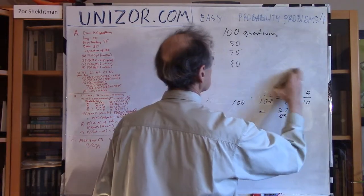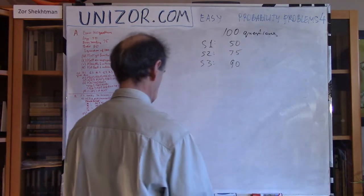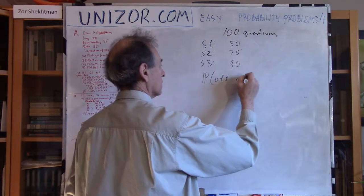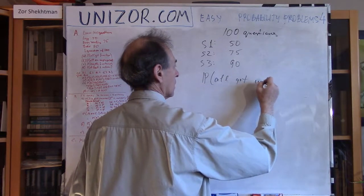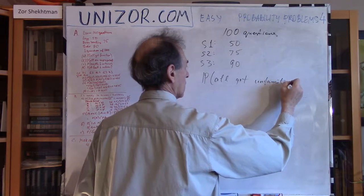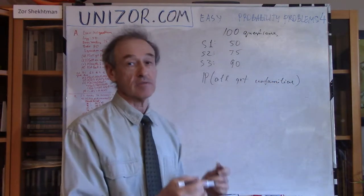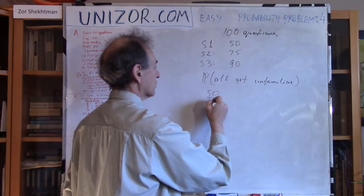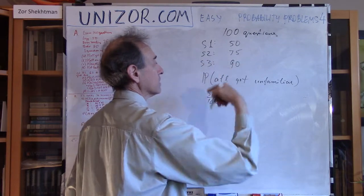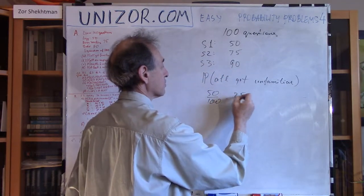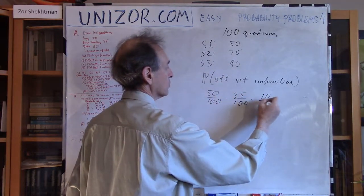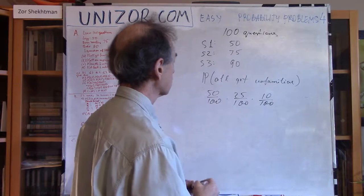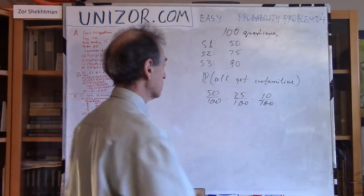Now question number two: what's the probability of all students getting an unfamiliar question? Well, these are opposite events. For the first one, to get unfamiliar — if he is prepared for 50, then unfamiliar is also 50, so it's 50 one-hundredths. For the second one, if he is prepared for 75, he is not prepared for the last 25. For the third one it would be 10 one-hundredths. Multiplying them again, because these are independent events, the probability of the combined occurrence of three independent events equals the product of their probabilities. That's the answer.